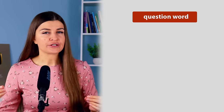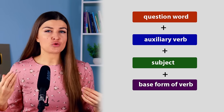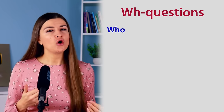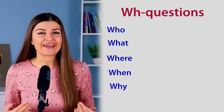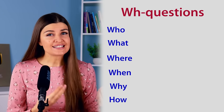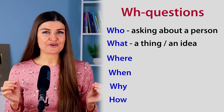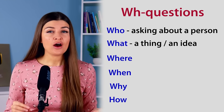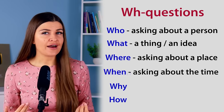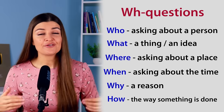When we ask a WH question, we usually put a question word plus an auxiliary verb plus subject plus base form of a verb. WH questions are questions we ask using words that start with WH — like who, what, where, when, why, and how. We use these questions to find out more information and details about something. Who is for asking about a person; what is for asking about a thing or an idea; where is for a place; when is for the time; why is for a reason; and how is for asking about the way something is done or happens.